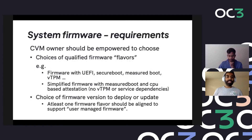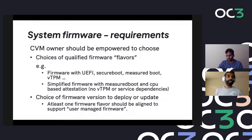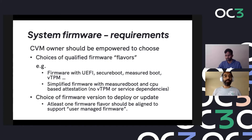We can start posturing some requirements toward our design. First, we should think of system firmware as a choice and offer flavors of system firmware. We don't want too many choices confusing users, but having a few flavors makes sense: for example, one firmware may have secure boot, measured boot, vTPM, and full functionality for a typical VM deployment, while another user might prefer a simplified firmware focused just on measured boot and CPU-based attestation with no reliance on virtual TPM.